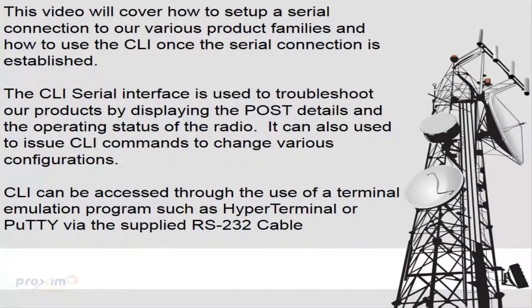This video will cover how to set up a serial connection to our various product families and how to use the CLI once the serial connection is established. The CLI serial interface is used to troubleshoot our products by displaying the POST details and the operating status of the radio. It can also be used to issue CLI commands to change various configurations. The CLI can be accessed through a terminal emulation program such as HyperTerminal or PuTTY via the supplied RS-232 cable.